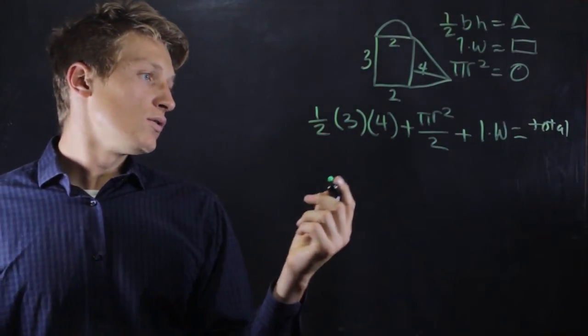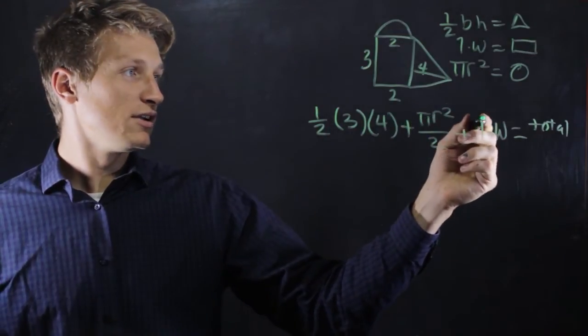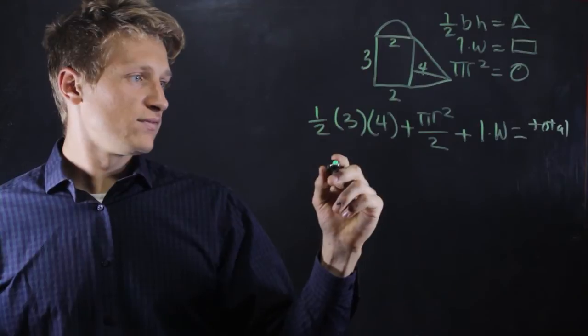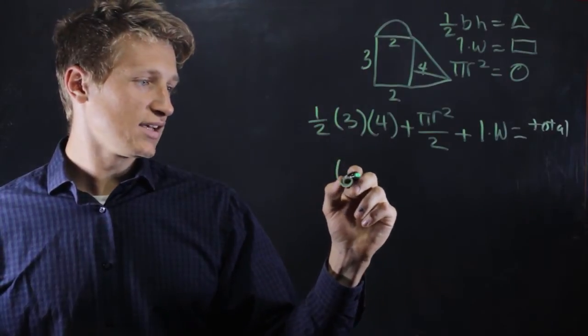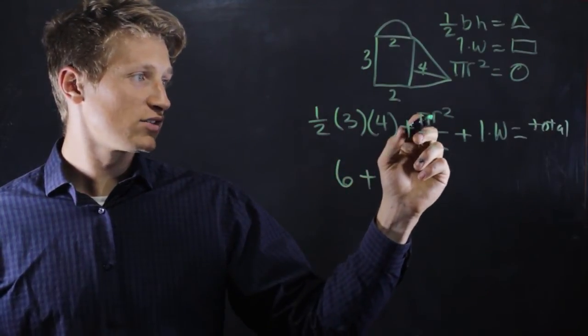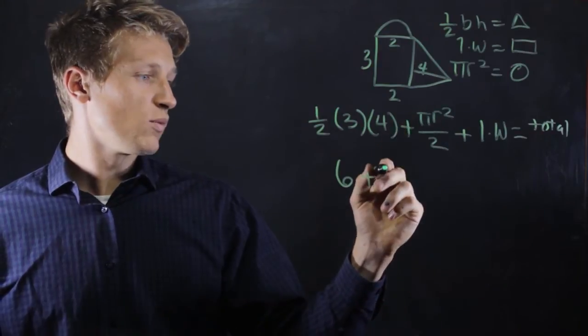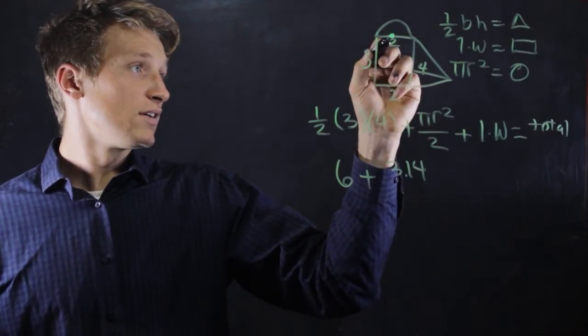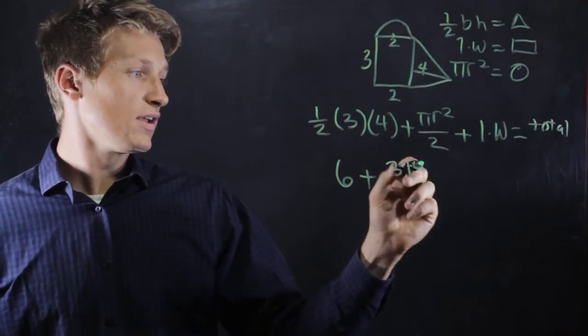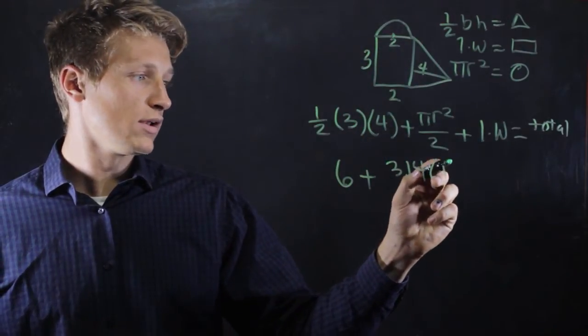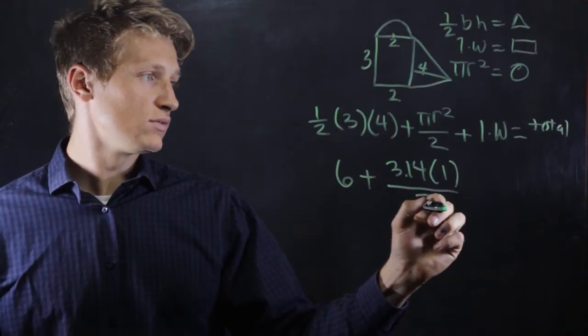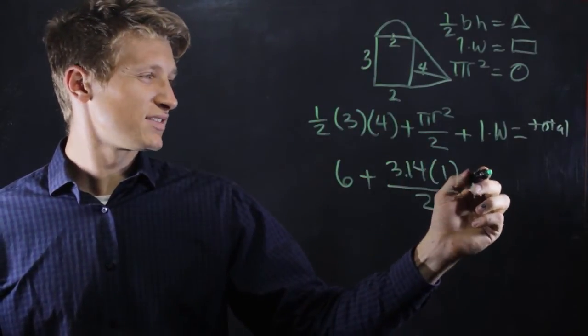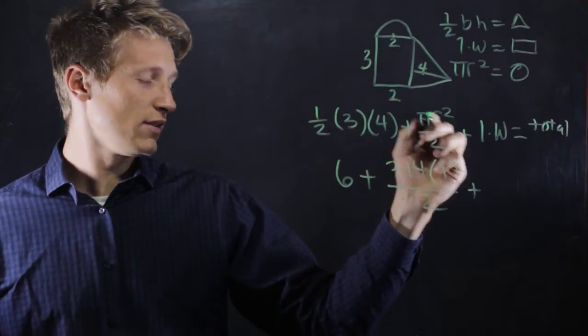Now let's finish up plugging in the numbers. So we'll get 1/2 times 3 times 4, that's 6, plus pi r squared. That's 3.14 times r squared, the radius which is 1 here, squared is 1, divided by 2, plus 3 times 2 which is 6. The length times the width right here.